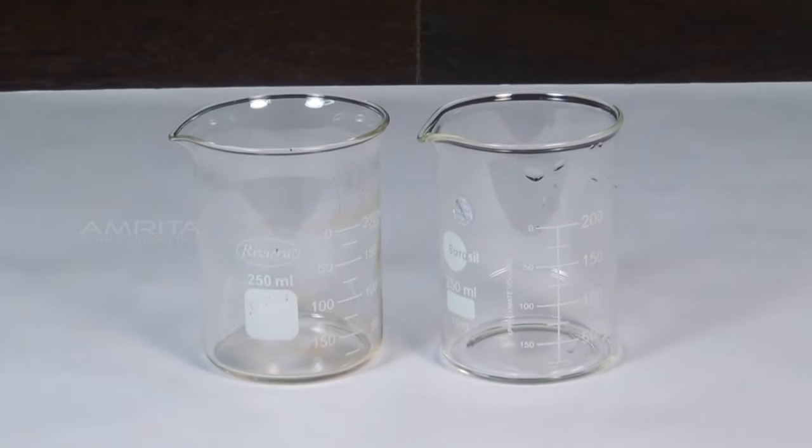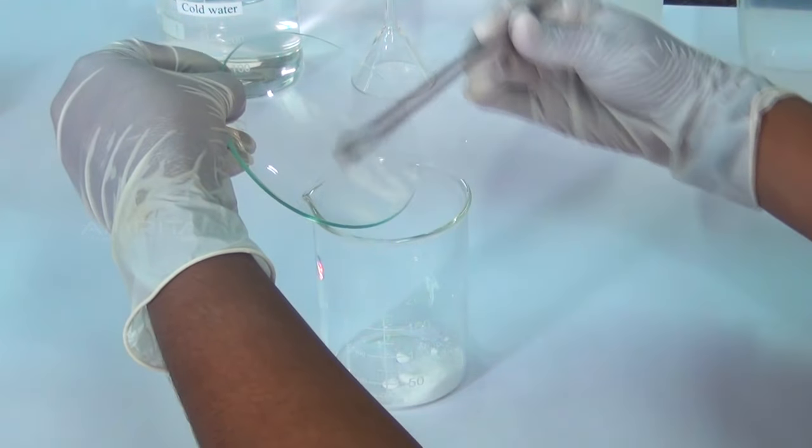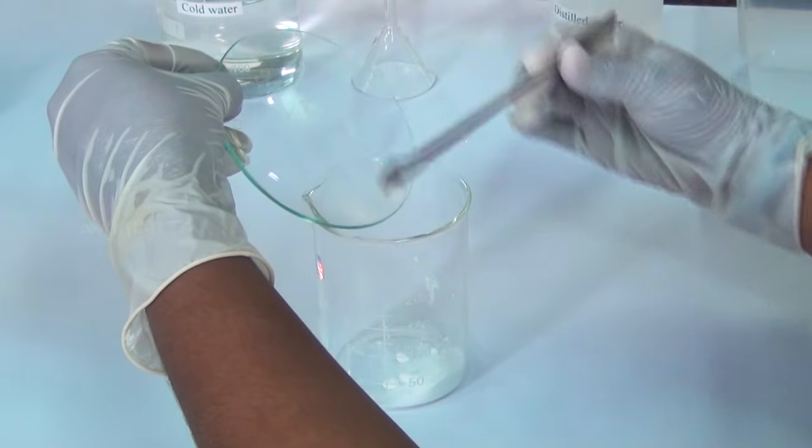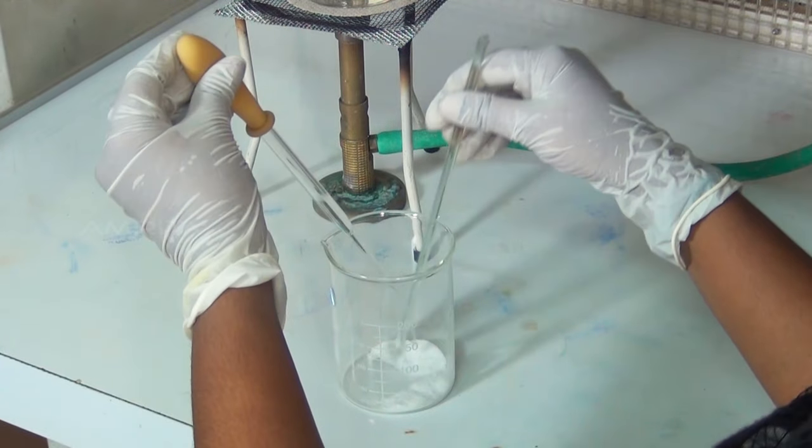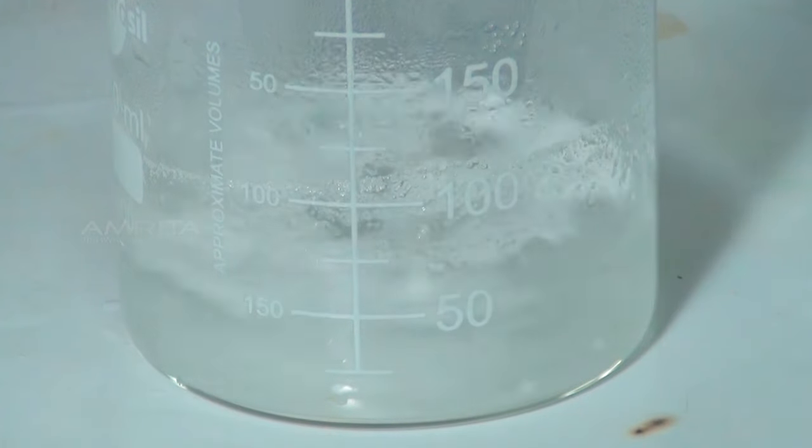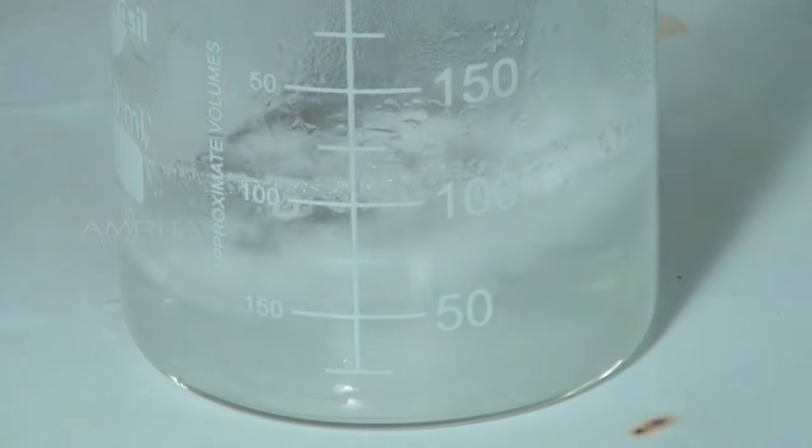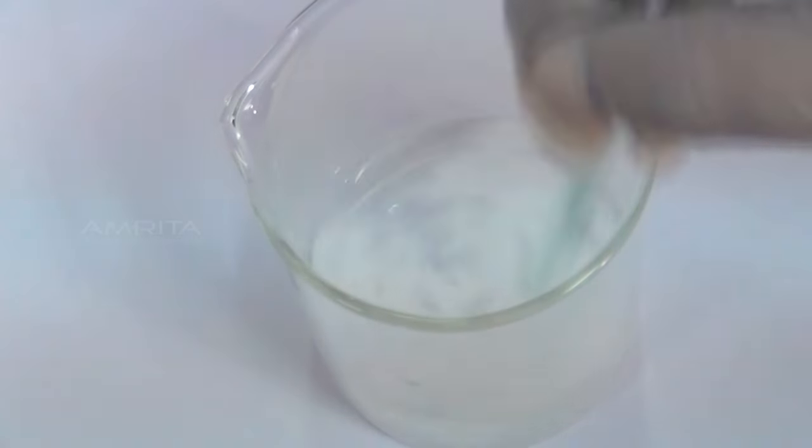In another beaker, take about 3g of crude sample of benzoic acid. To this, using a dropper, gradually add a minimum quantity of boiling water, just sufficient to dissolve benzoic acid. Stir using the glass rod.